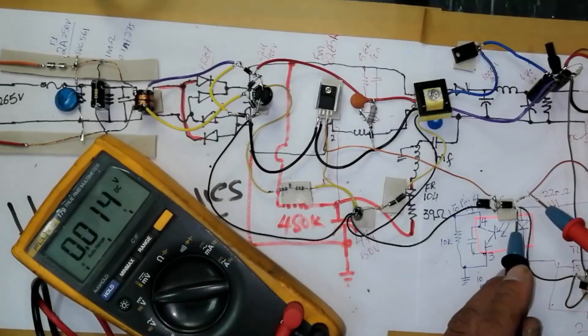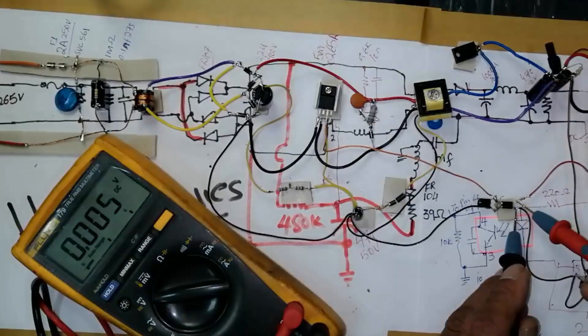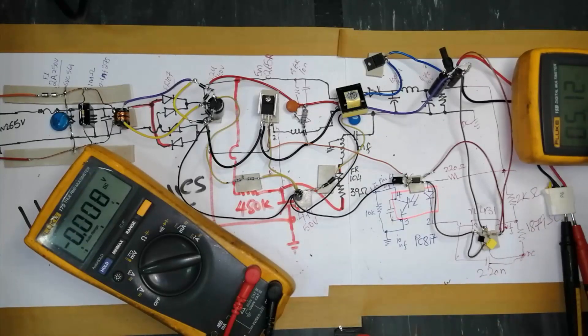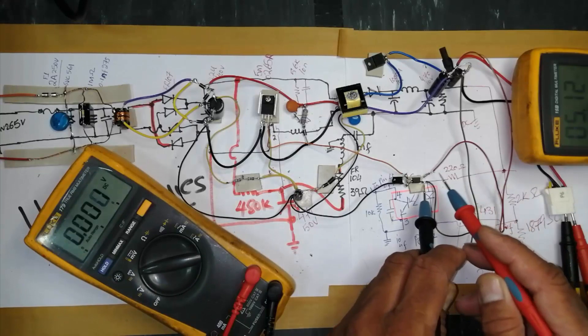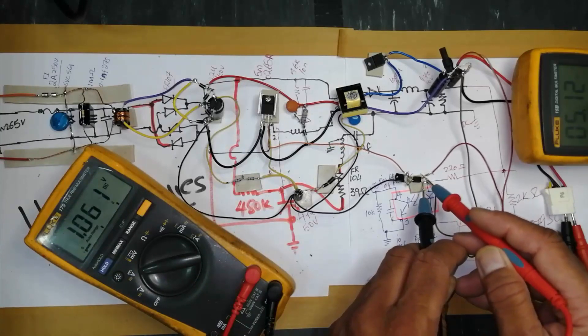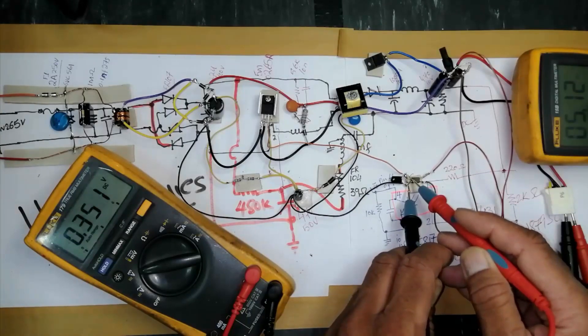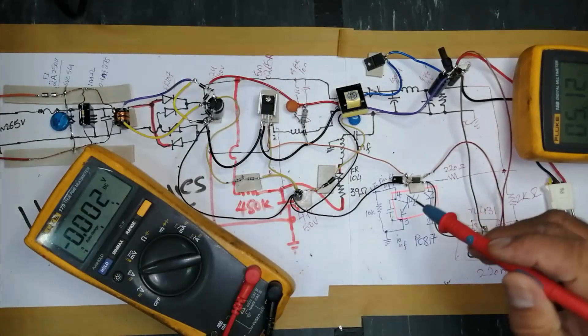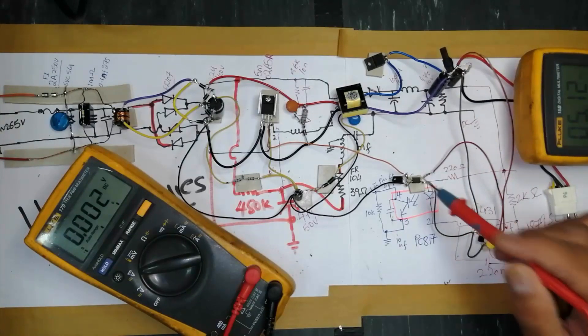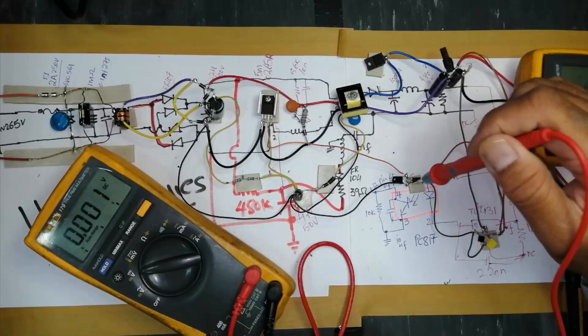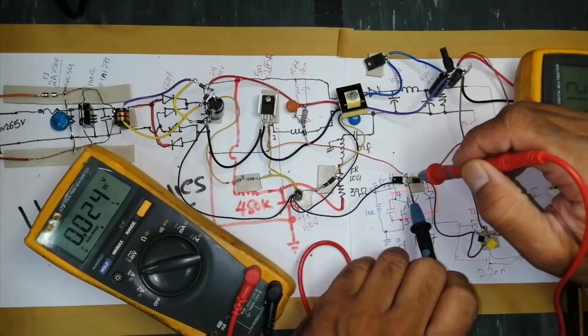If we take this 1 volt, that means our feedback circuit is working properly. Here I take 5 volt, 5.11 volt. In this area I am taking 1 volt, and at the output end it is 0.35 volt.